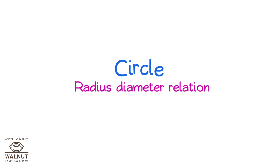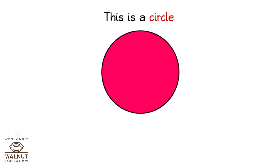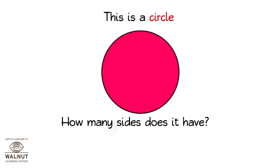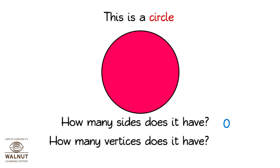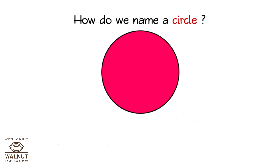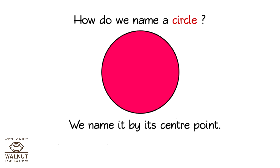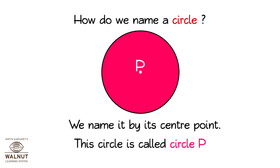This is a circle. How many sides does it have? Zero. How many vertices does it have? Zero. How do we name a circle? We name it by its center point. This circle is called circle P.